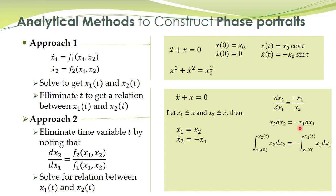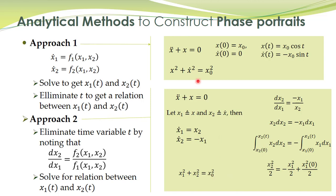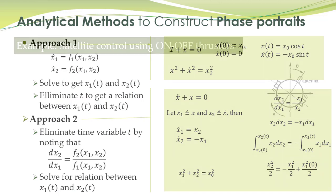We integrate both sides — the left side with respect to x2 and the right side with respect to x1. The integral of x2 gives x2 squared by 2. Substituting the initial conditions where x-dot(0) equals 0, that is x2(0) equals 0, we obtain the result on the left-hand side and the right-hand side after integration. This gives the same equation as before, confirming the result. This approach will be more clear from the next example.